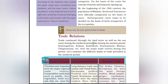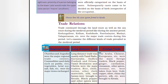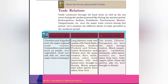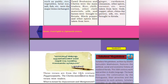Trade continued through land routes as well as sea routes during the medieval period. Kodungallur, Kollam, Kozhikode, Panthalayini, Madai, Valapattanam, etc. were the major trade centers during this period. Chandas and angadis were major regional trade centers where daily commodities such as paddy, rice, vegetables, betel nuts, salt, and fish were exchanged. Long-distance trade was mainly with Tamil Nadu, Karnataka, Andhra Pradesh, and Orissa. Tamil Brahmins and Chetties were the main traders; rice, chili, cotton, cloth, silk, and horses were brought to Kerala while black pepper and other spices were taken from here. The Arabs, Chinese, and Europeans were the main foreign traders; black pepper, ginger, cardamom, cinnamon, and other spices were exported, while gold, copper, silver, China clay, pottery, and silk were imported.